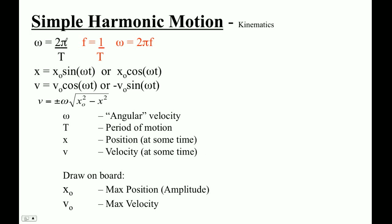Angular velocity is just 2π radians in a cycle divided by T, the period — the time to go around one full cycle. So omega equals 2π over T. T is in seconds, and omega is in radians per second.